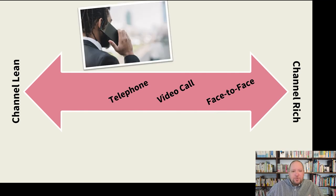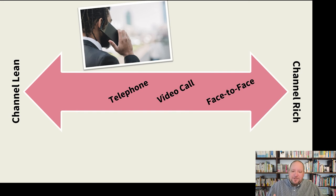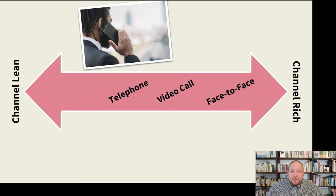Moving even further down towards leanness, we're talking about just talking on the telephone. It's more lean — we can't see the person, but we can hear their voice and the language they're choosing. We can't see their facial expressions, what they're wearing, or what environment they're in. Those types of contextual clues are missing, so it's more lean than the other options we've talked about.